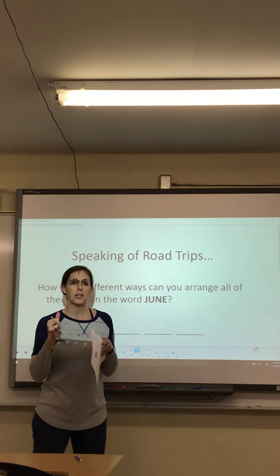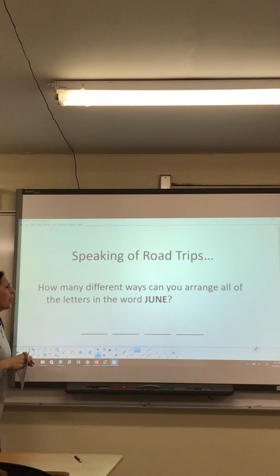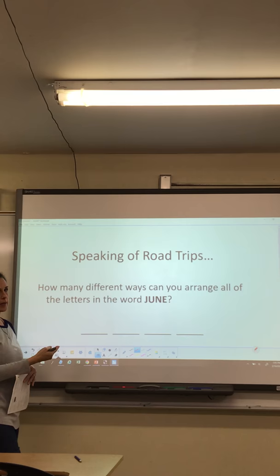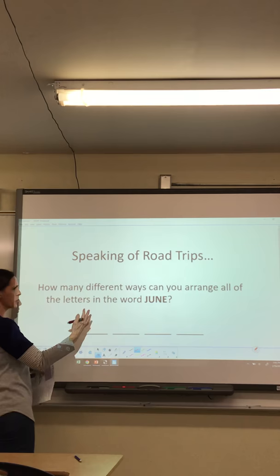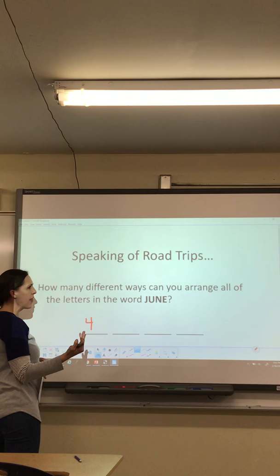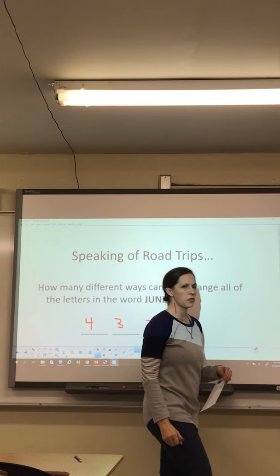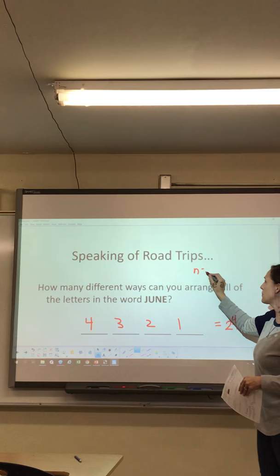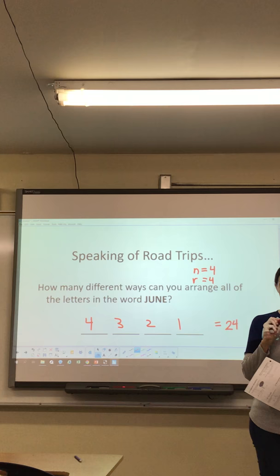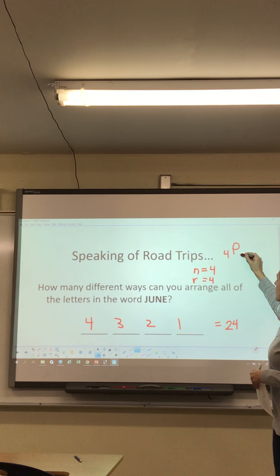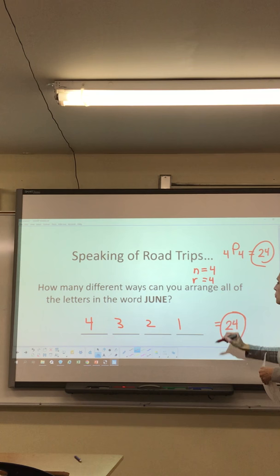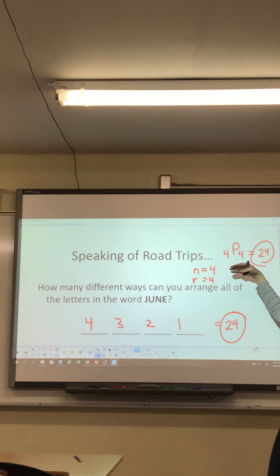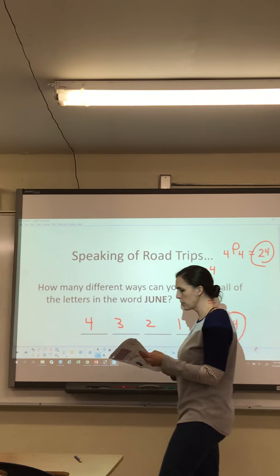Feel free to pause this video and make sure you can do the math in your calculator as we go. Next example: how many different ways can you arrange the letters in the word JUNE? There are four spaces and four letters to choose from. For the first space you have four choices, then three, two, and one. Multiplying across gives 24. Using the calculator: n is four total letters, r is four letters chosen, so 4P4 also gives 24.